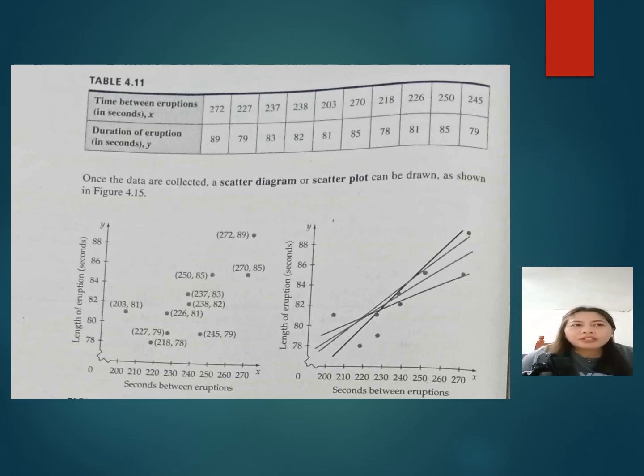First, we count how many samples we had. We have 10 eruptions. Our x is time between eruptions, and y is duration of eruption.